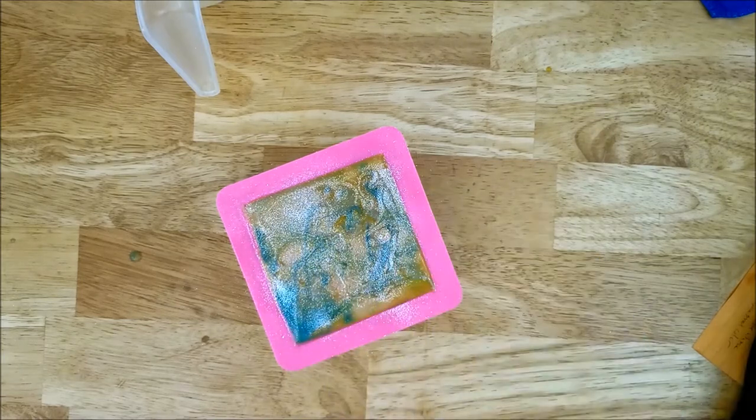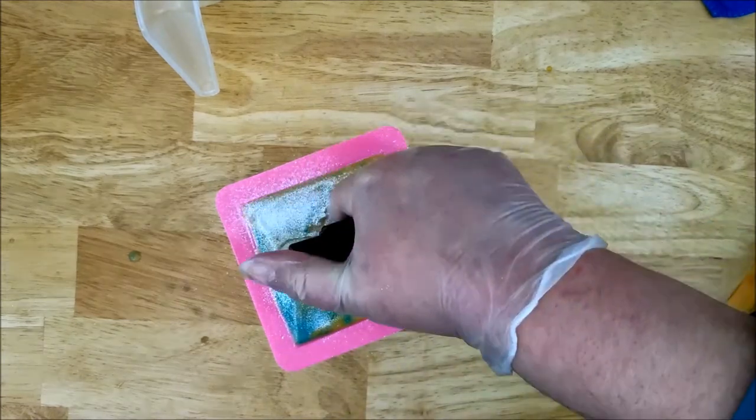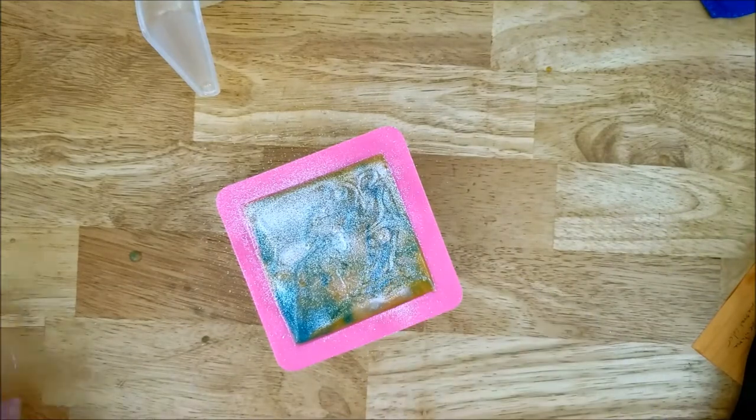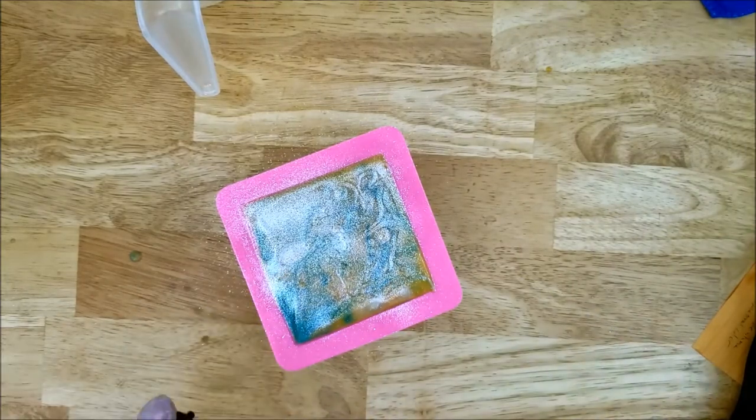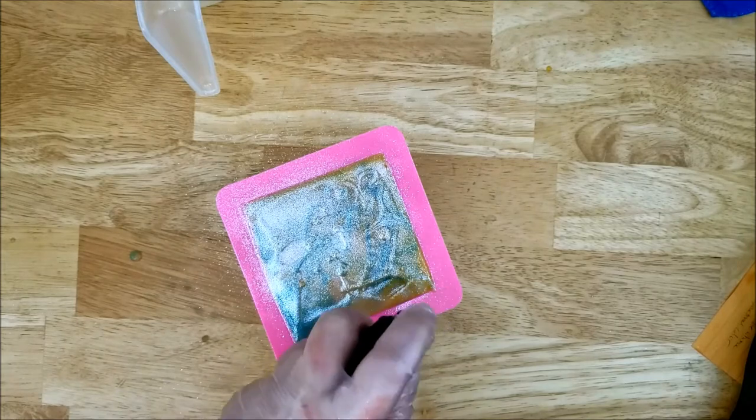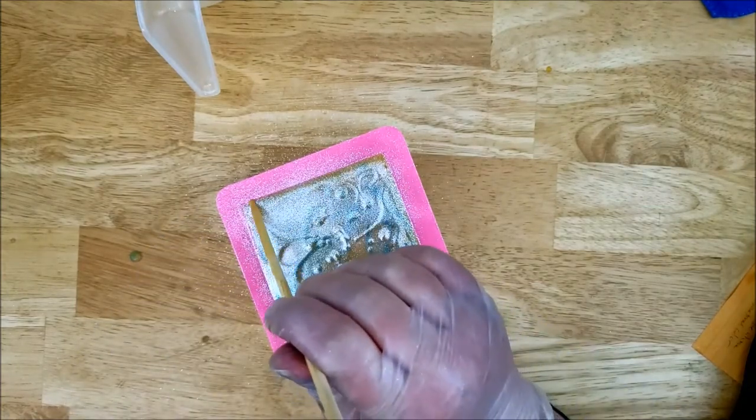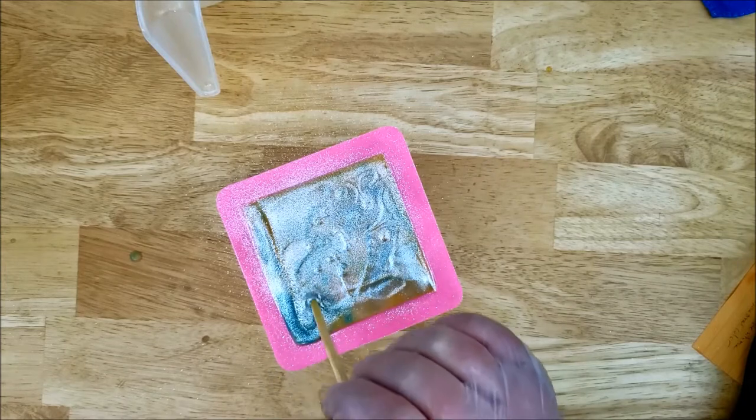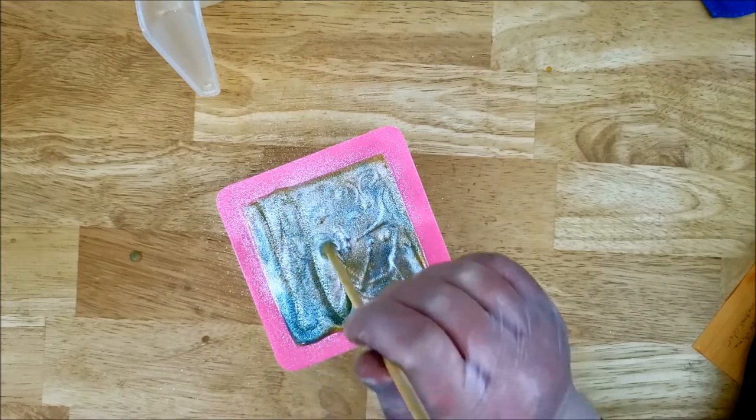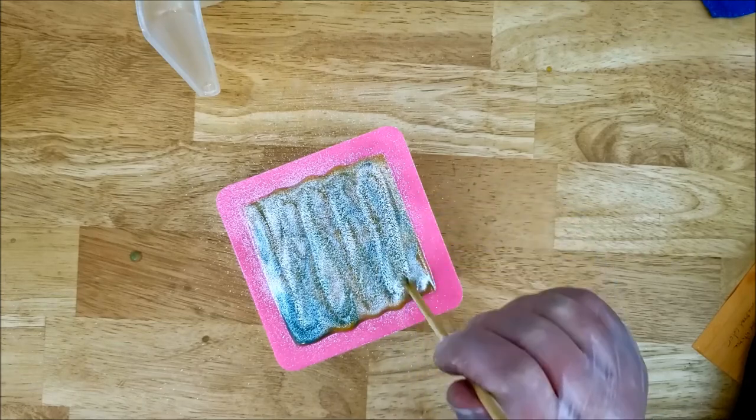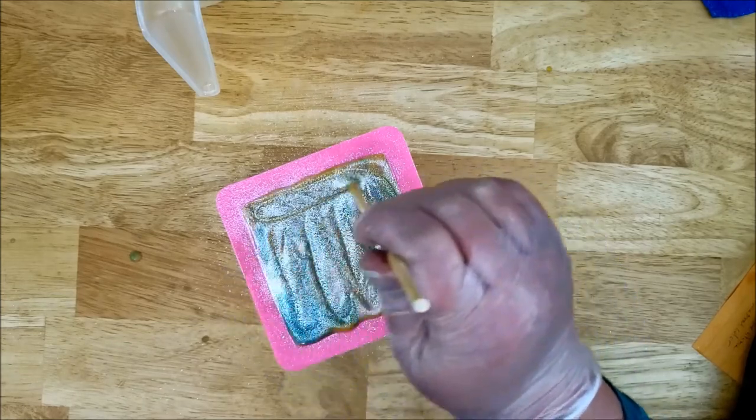And here I'm just going to spray on some shimmer on top. This will just give the top a pretty accent. And I'm going to use this chopstick to give the top a texture. It's not going to make a very distinct pattern, it's going to be more like a subtle texture. Which I think will look really pretty.